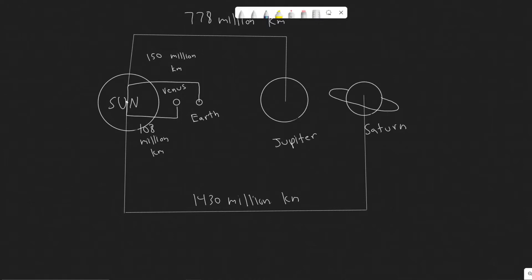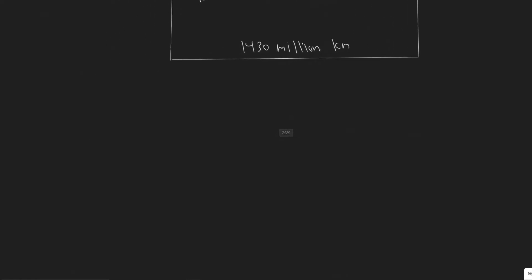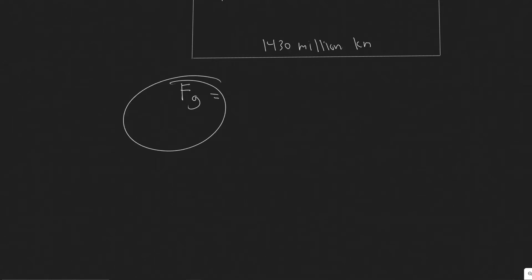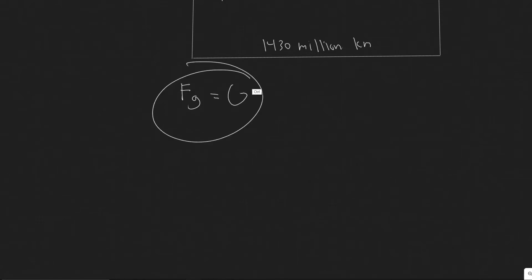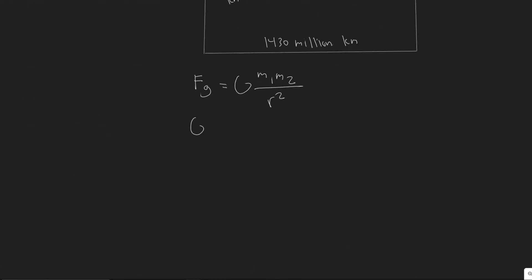The first thing you need to know for this problem is the formula for the force due to gravity, since we're calculating the total force on Earth due to these other planets. The formula is F_gravity = G·m1·m2 / r². G is a constant value you should memorize: it's equal to 6.67 × 10⁻¹¹.